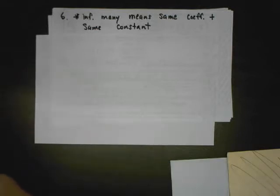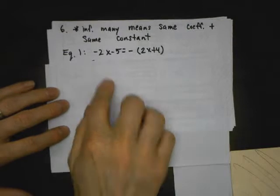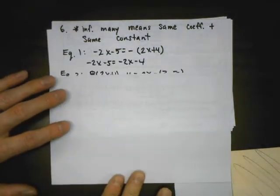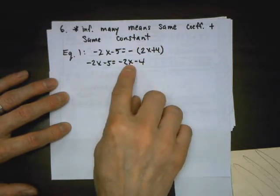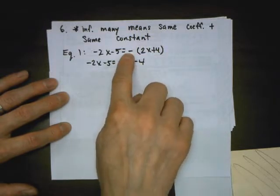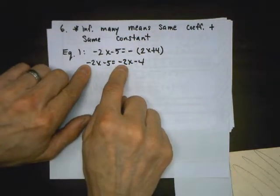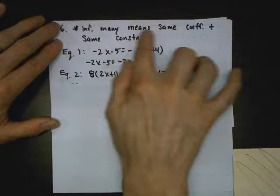Number 6: when picking how many solutions there are, infinitely many solutions means you'll have the same coefficient and the same constant. We're going to simplify all of these. Equation 1: the left side is already simplified; the right side I distribute a negative. Negative times 2x is negative 2x, negative times 4 is negative 4. I have the same coefficients but different constants — that's no solution.